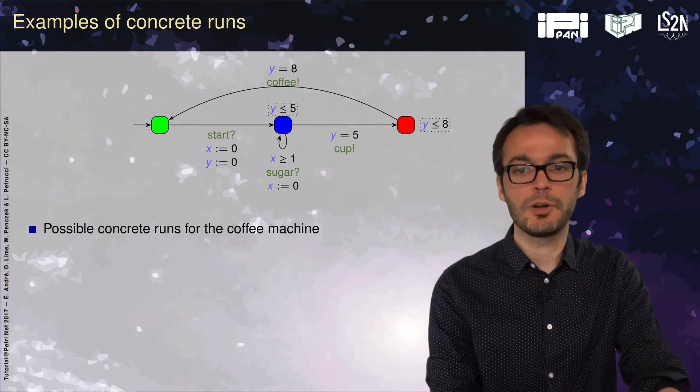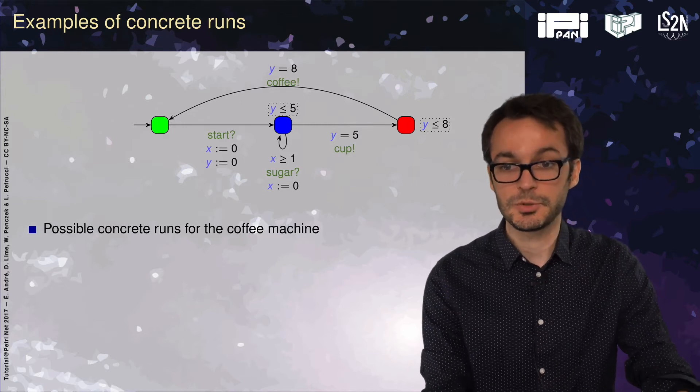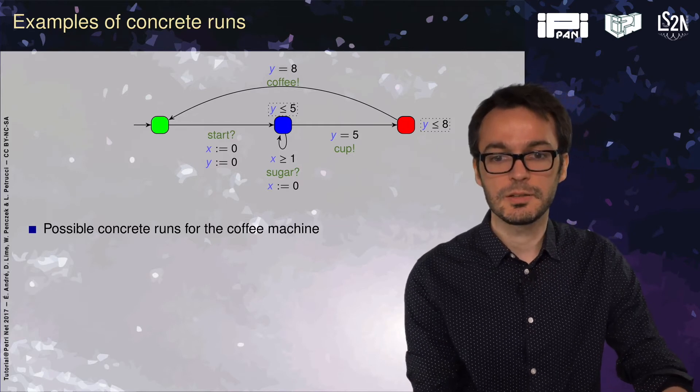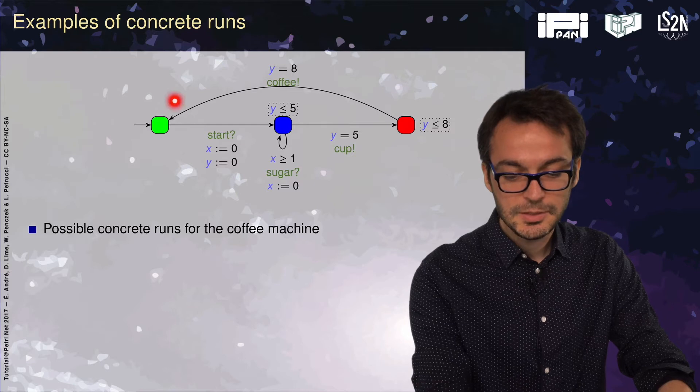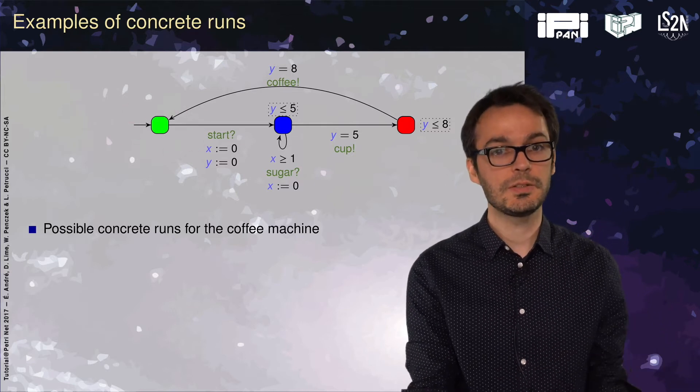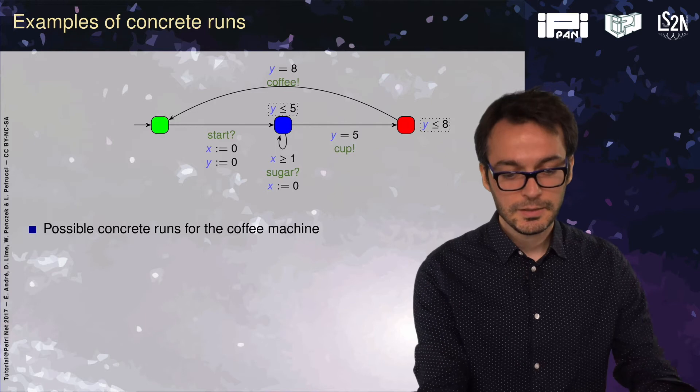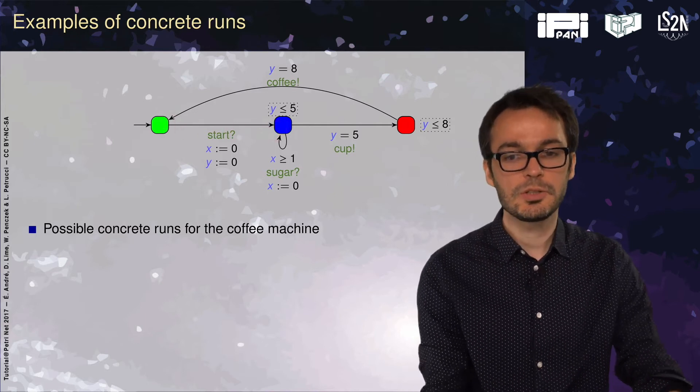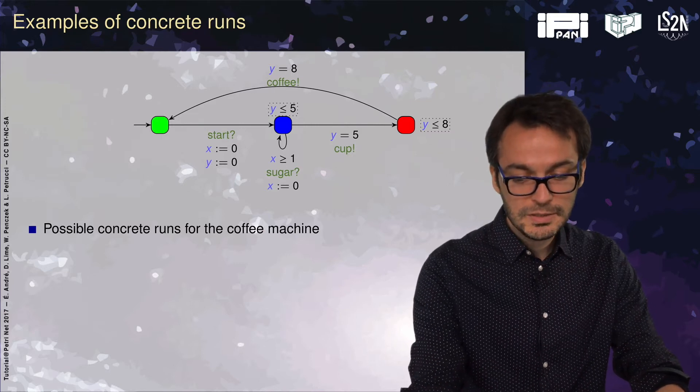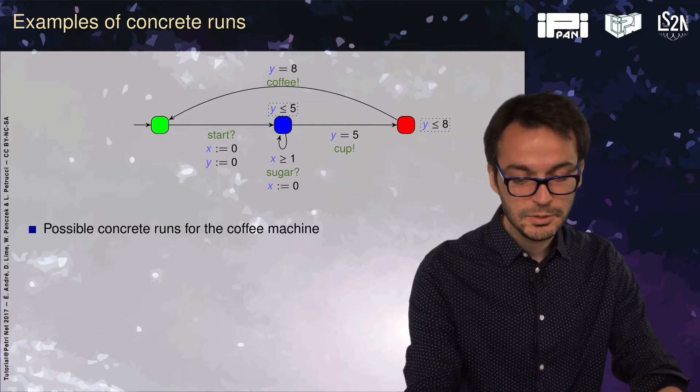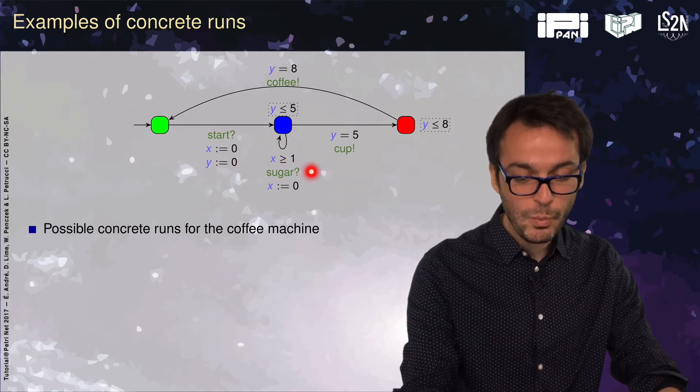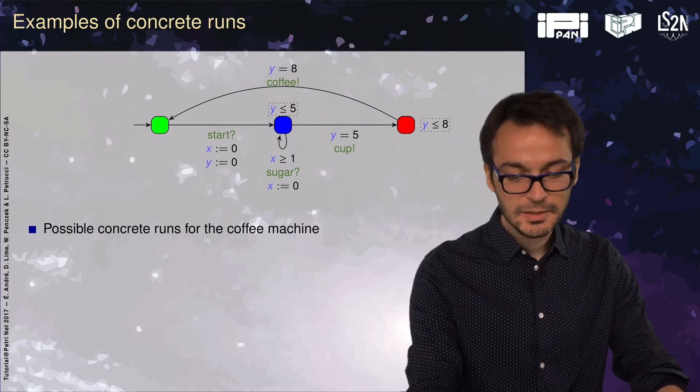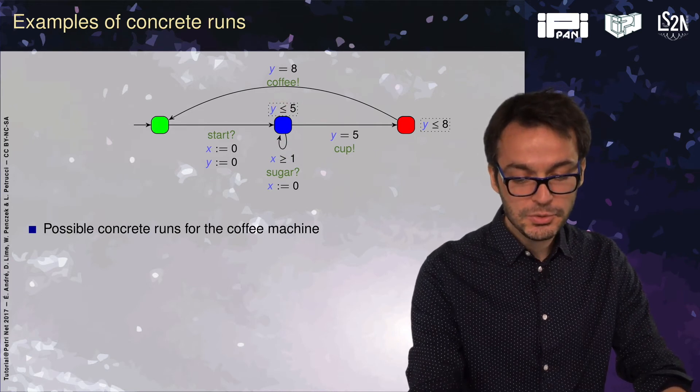Let me give you a few examples of concrete runs for this coffee machine. This is a coffee machine with three discrete states. The green location is the idle mode. If we press the button start, we enter the blue location where you can add sugar. You can press the sugar button at least one time unit apart, and you can stay up to five time units. So you can add at most five doses of sugar.